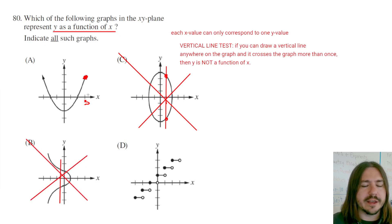Now, for A, there's nowhere here where anywhere I draw this vertical line, it's always just going to hit the graph once. There's no overlapping points here, so A is definitely going to be an answer, and this does indicate all such graphs, so there may be more than one right answer.